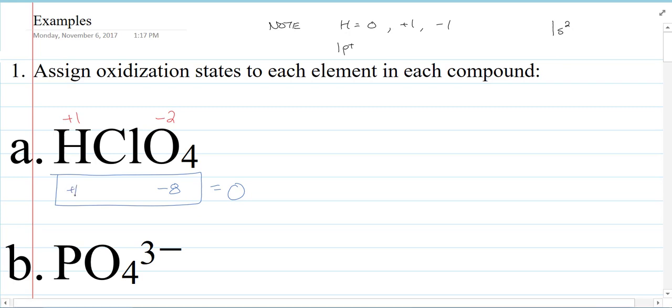That means chlorine can be plus seven. There you go. And how do you know that? Because you can separate these guys, can't we? H plus and ClO4 minus. You can always separate them and do the ions individually.